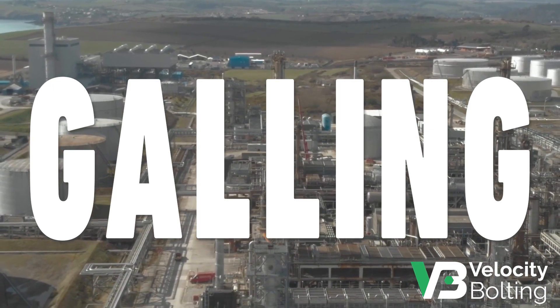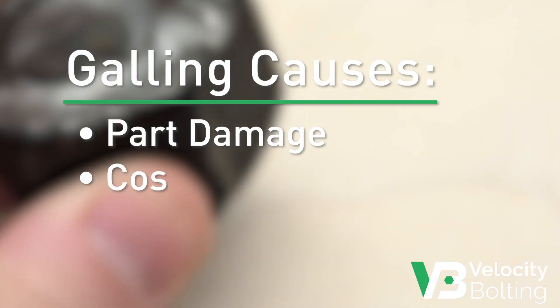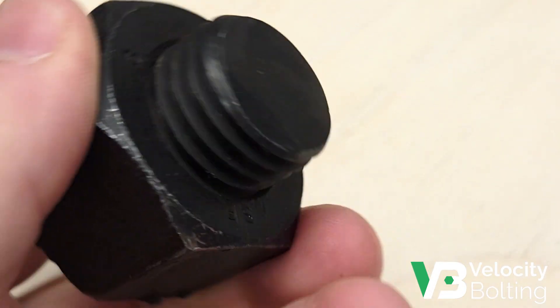Galling is a serious disruption in the operation of threaded fasteners. It causes part damage and costly delays throughout heavy industry every single day. You've probably seen it yourself.